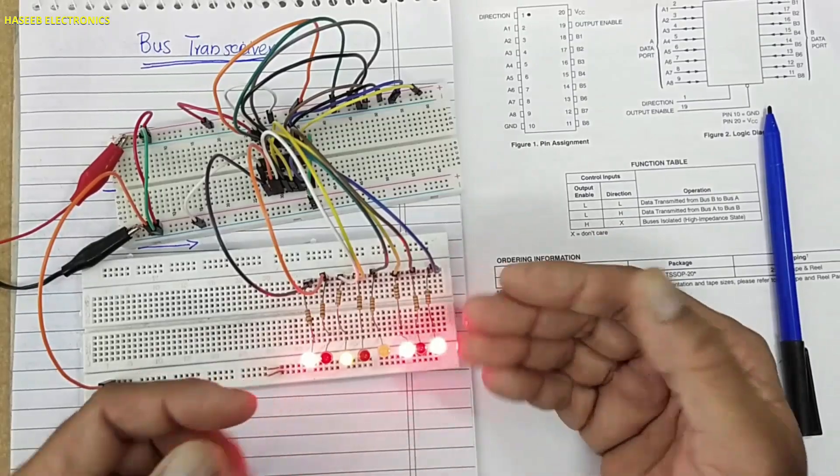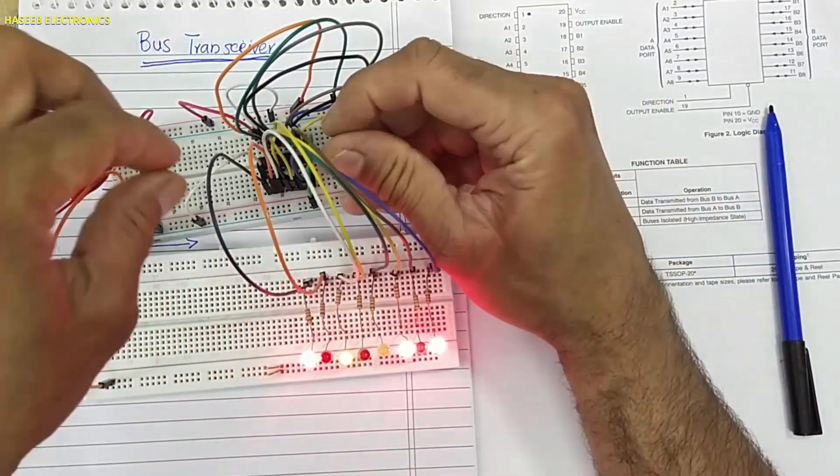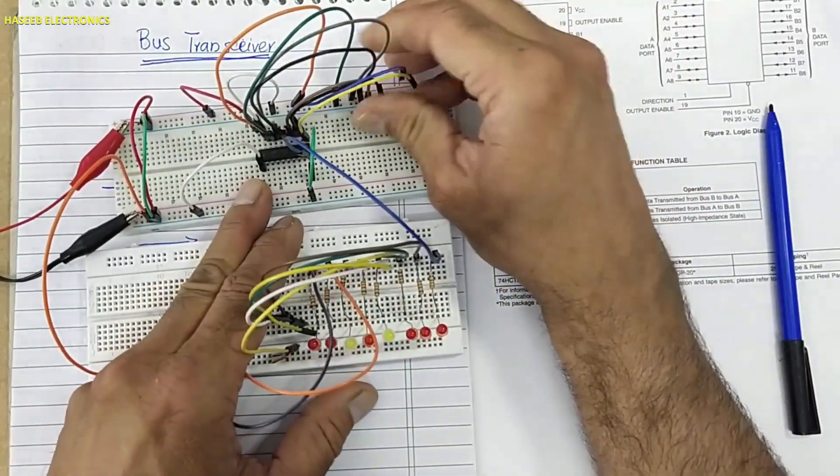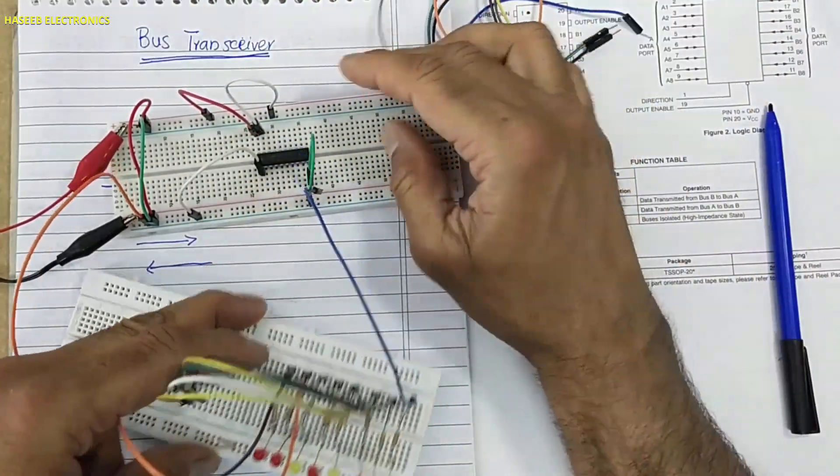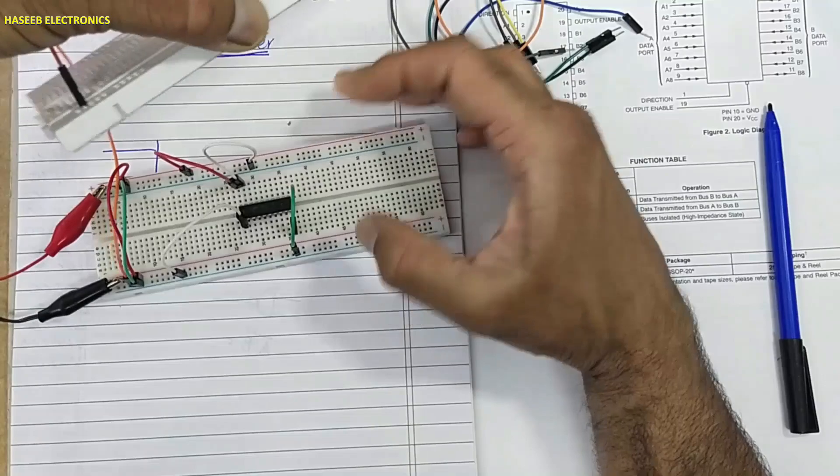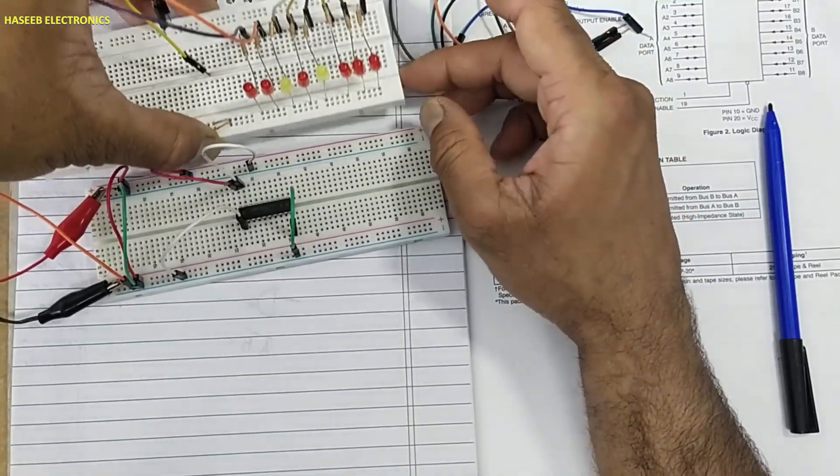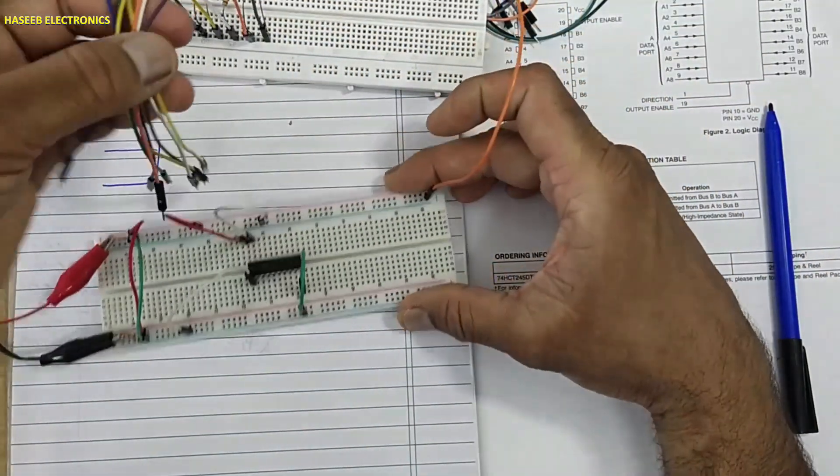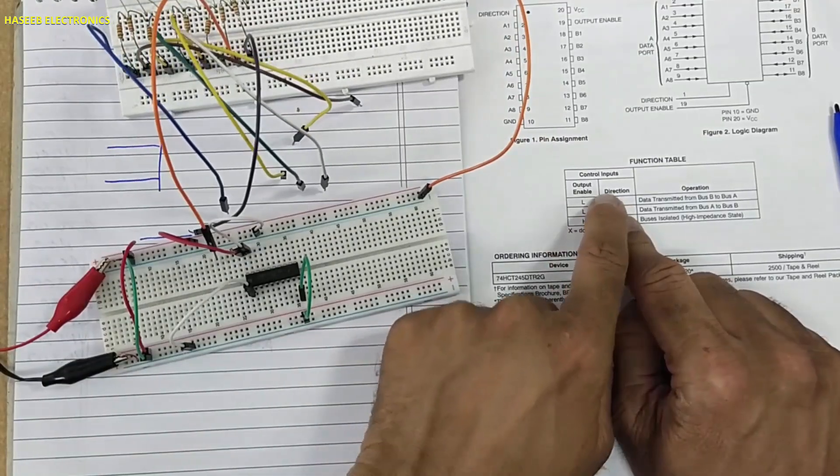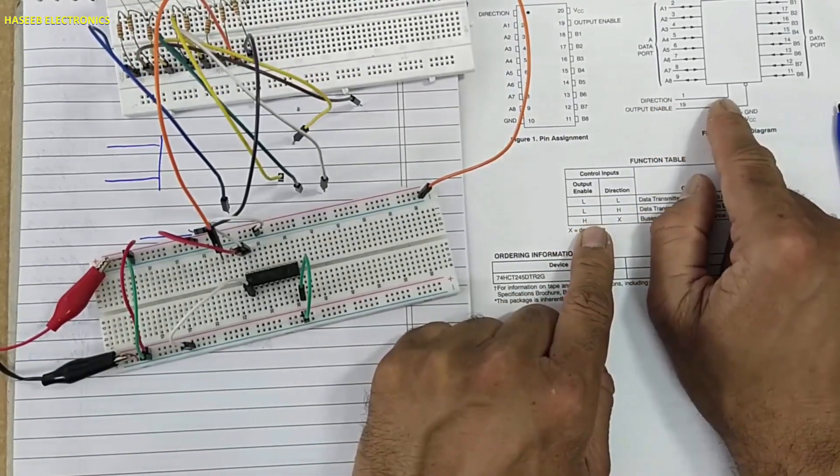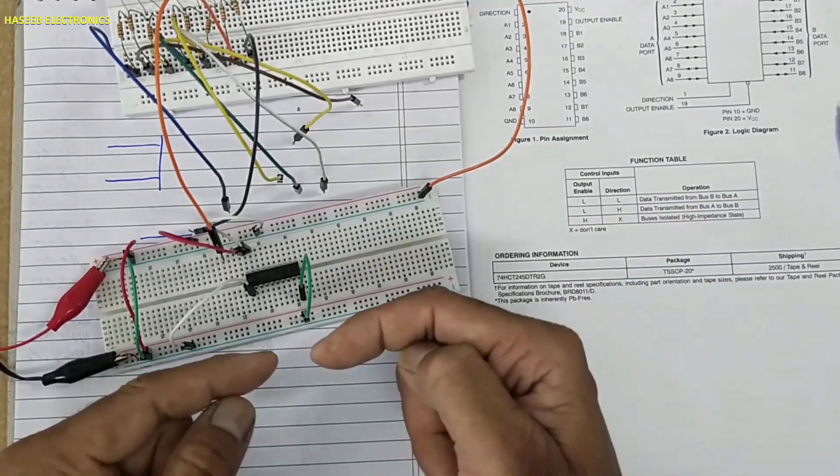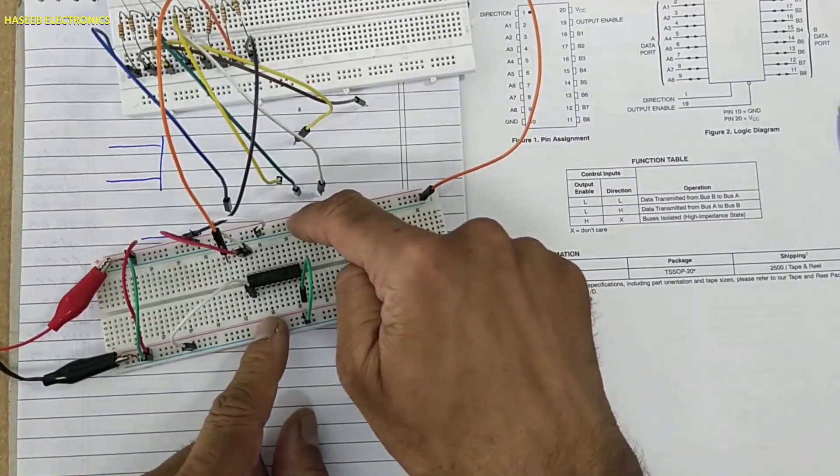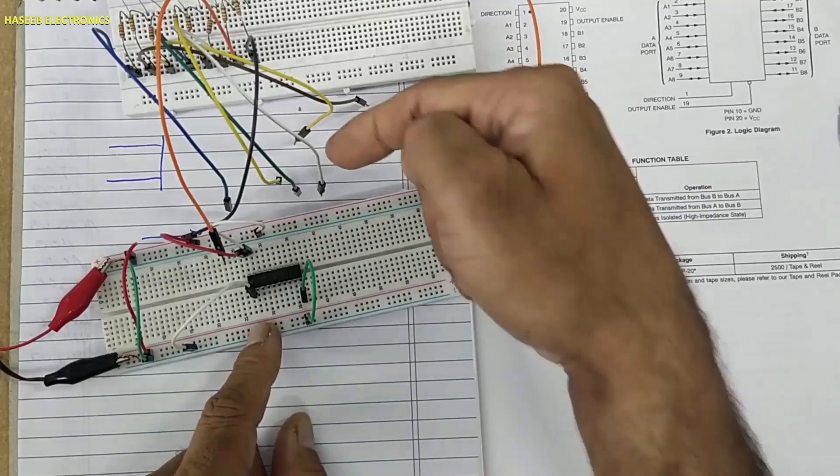Now we will change the data direction. I will remove the outputs and I will remove all inputs. A side is from pin number 2 to 9 to B side. Before this, this was input and this was output, but now this is input and this is output side.